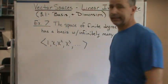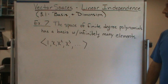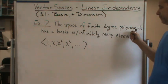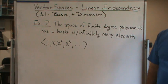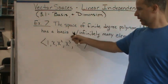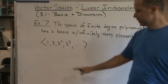Okay, welcome back. In this example here, this is an example of where we have a finite degree polynomial - the space of finite degree polynomials - but it has a basis with infinitely many elements because we can...